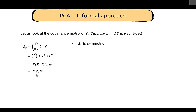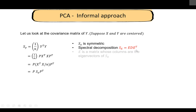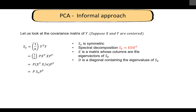Now, Sx is symmetric, and for symmetric matrices we can apply the spectral decomposition. We write Sx = E D E-transpose, where E is the matrix whose columns are the eigenvectors of Sx and D is the diagonal matrix containing the eigenvalues of Sx. This is why we spent time on matrix algebra. Substituting this into our equation gives us the expression for Sy.